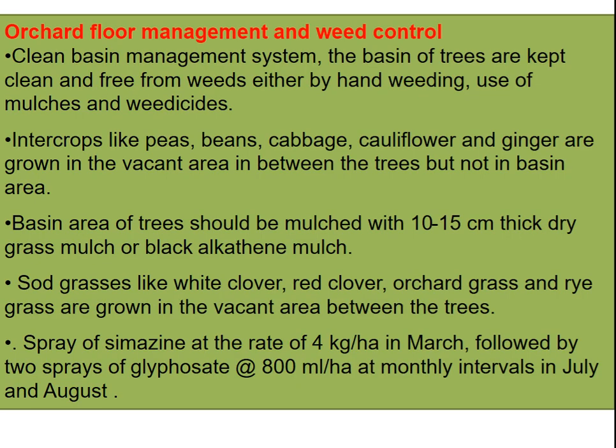Orchard floor management and weed control: in the clean basin management system, the basin of the tree is kept clean and free from weeds by hand weeding or use of mulches. Inter-crops like peas, beans, cabbage, cauliflower, and ginger are grown in vacant areas between trees but not in the basin area. The basin should be mulched with 10 to 15 cm thick dry grass mulch or black polythene mulch. Sod grasses like white clover, red clover, orchard grass are grown in vacant areas. Simazine is sprayed at 4 kg per hectare in March, followed by two sprays of glyphosate at 800 ml per hectare at monthly intervals in July and August.